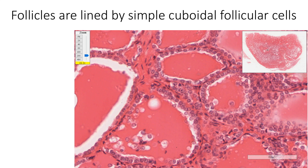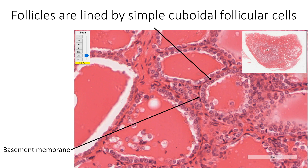Follicles are lined by simple cuboidal cells called follicular cells, which are arranged on a basement membrane. They may vary from being squamous to columnar cells based upon their level of activity. These follicular cells secrete T3 and T4, which helps in regulating the basal metabolic rate. They show basal basophilia with a central rounded nucleus. Under the electron microscope, microvilli can be seen on their apical surface, which are required for absorbing thyroglobulin from the colloid.